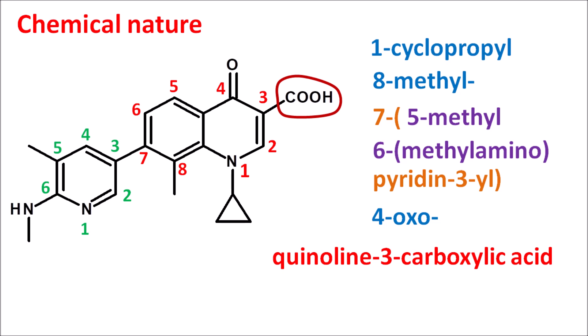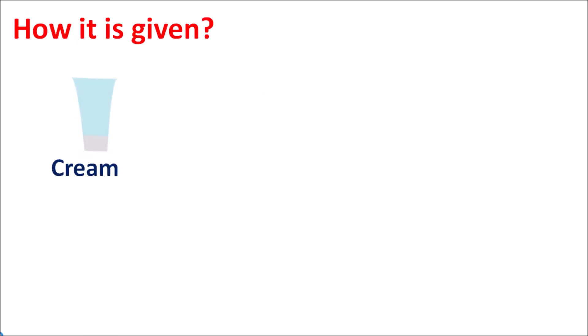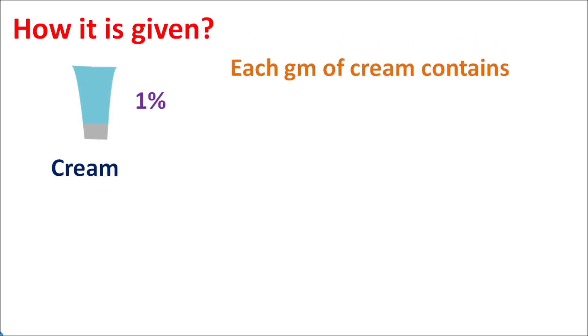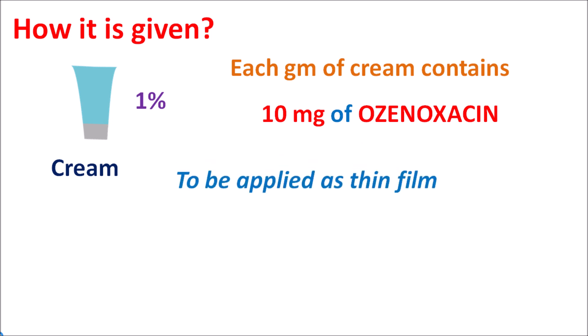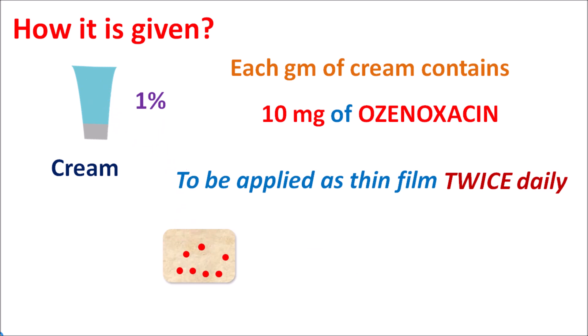So ozenoxacin is a quinoline derivative with a 4-oxo group, which is why it is also called a quinolone antibacterial agent. Ozenoxacin is available as a cream at 1% strength, and each gram of cream contains 10 milligrams of ozenoxacin. This cream should be applied as a thin film on the skin twice daily. The drug should be applied to an area less than 100 square centimeters, or less than 2% of the total body surface area, to reduce the total amount applied and prevent development of bacterial and fungal infections. By reducing the area and amount of drug applied, this drug can be safely used to treat impetigo without adverse reactions.